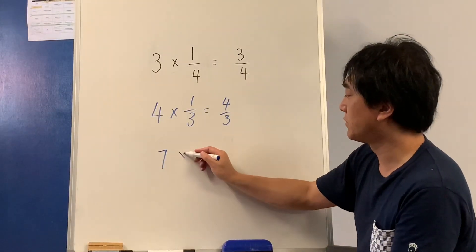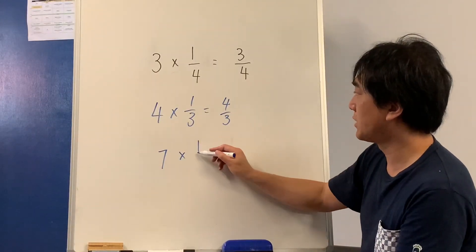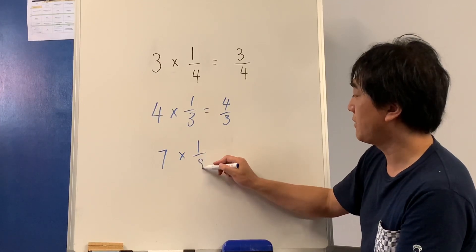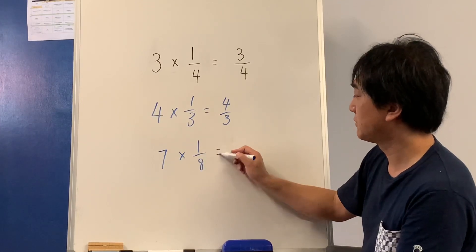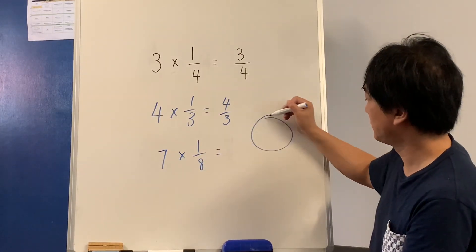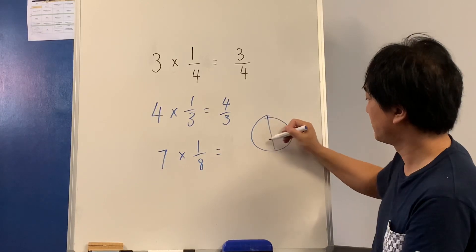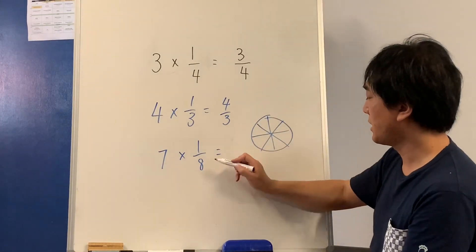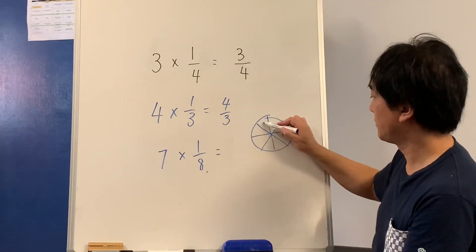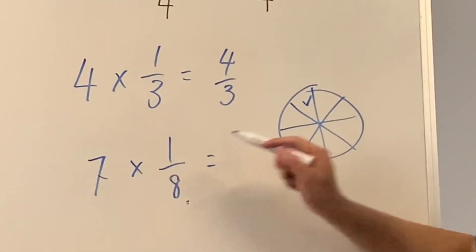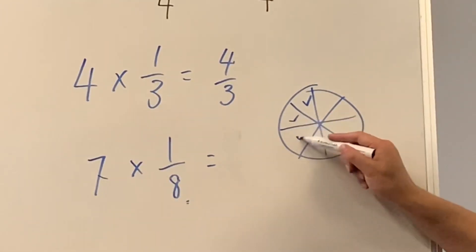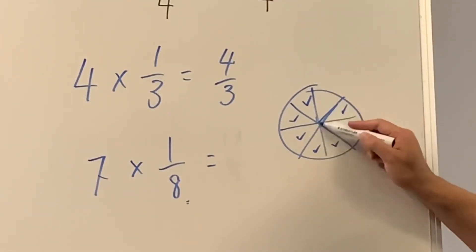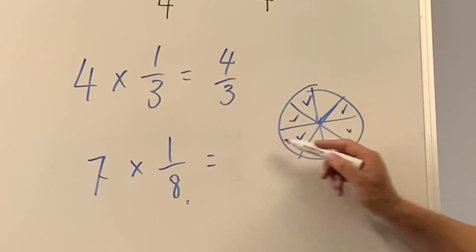Let's do 7 lots of 1 eighth. I need 7 lots of them: 1 eighth, 2, 3, 4, 5, 6, 7. I can see the answer is 7 eighths.